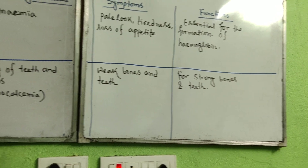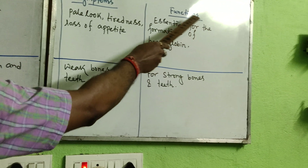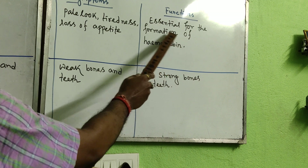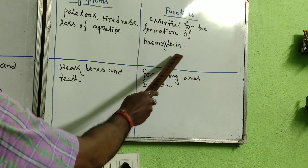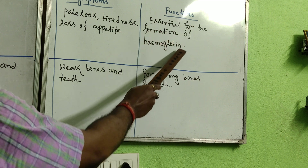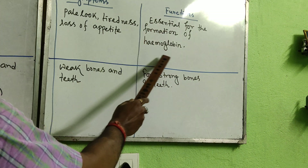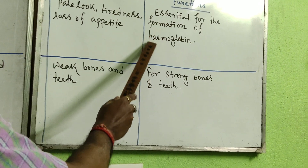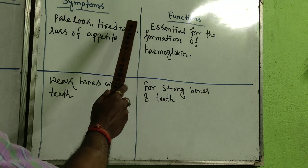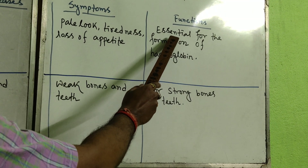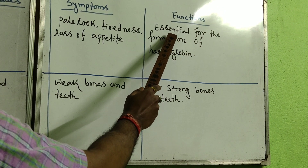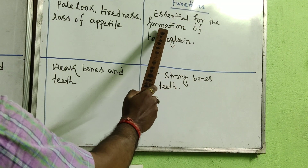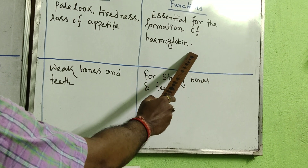The function of iron in your body: it is essential for the formation of hemoglobin. Hemoglobin is a kind of red pigment — due to hemoglobin your blood color becomes red. Because hemoglobin contains iron, the presence of iron makes blood red. If you get a sufficient amount of iron in your body, you will not face diseases like anemia. So iron is very much essential to form hemoglobin.